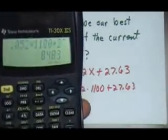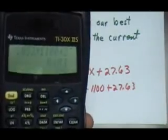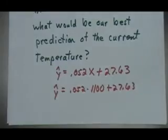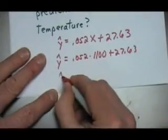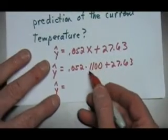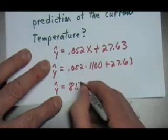So let's round that to the nearest degree, so that would be 85 degrees. Rounding that to the nearest degree, we can say that our best prediction for the temperature, with a cricket that chirped 1,100 times, is 85 degrees Fahrenheit.